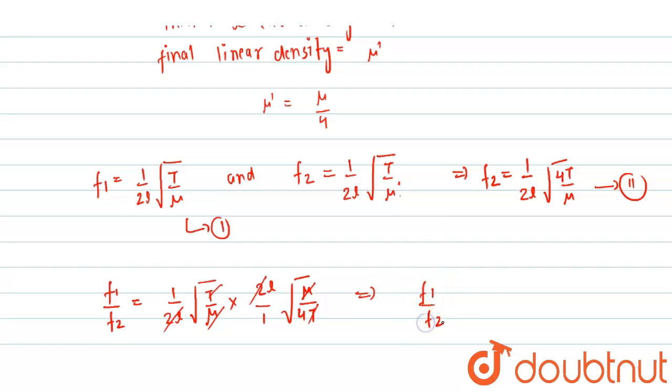f1 upon f2 will be equal to one upon four, so it will be f1 upon f2 is equals to one upon two. Okay, so from here we get that